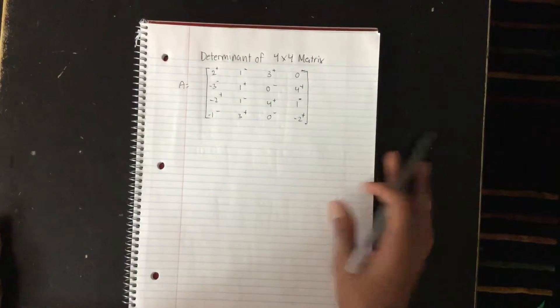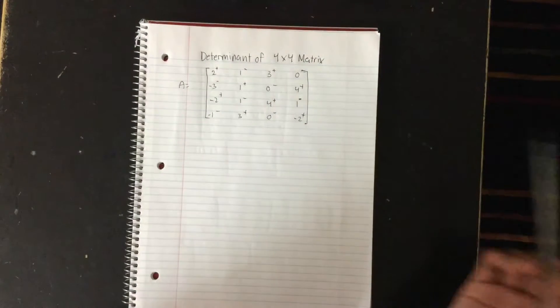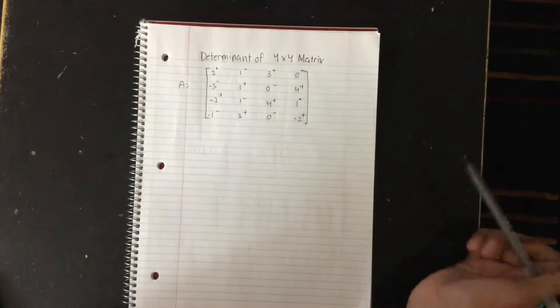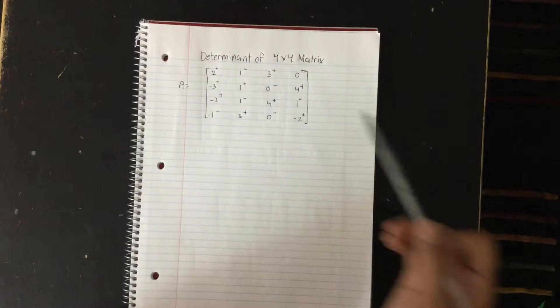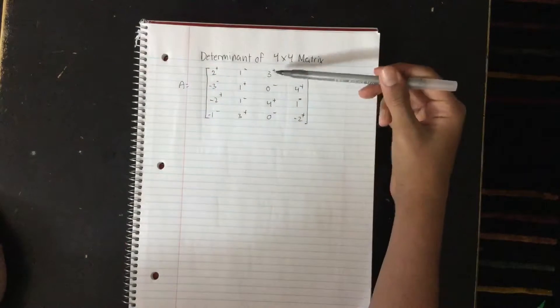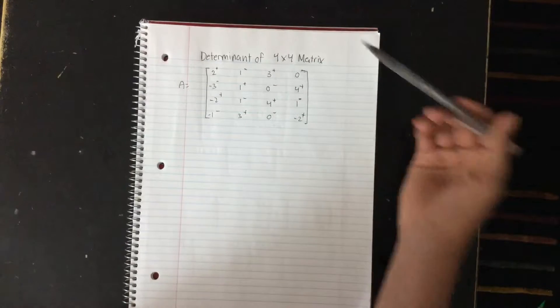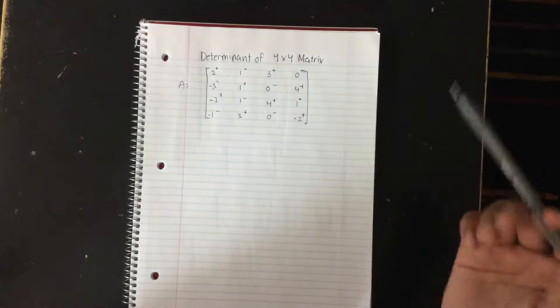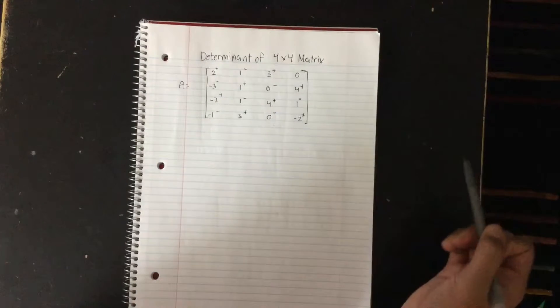Next, what you want to do is you want to find the row or column with the most zeros. I can see that our third column has the most zeros in it, and that's the column we're going to use to expand on.